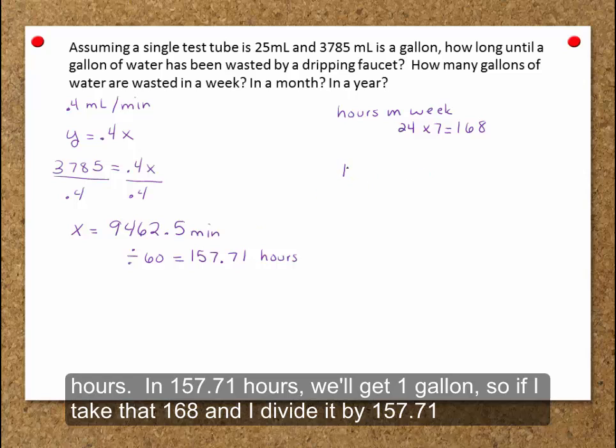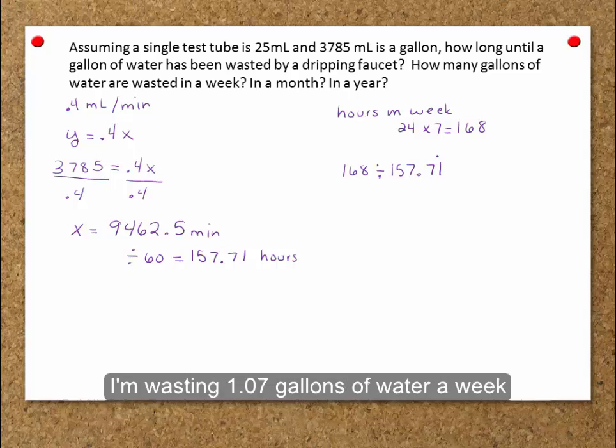In 157.71 hours, we'll get one gallon. So if I take that 168 and I divide it by 157.71, I'm wasting 1.07 gallons of water a week.